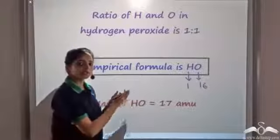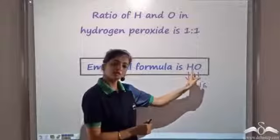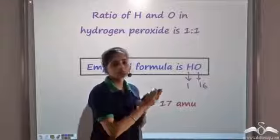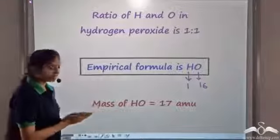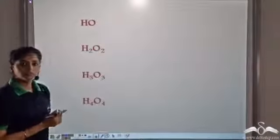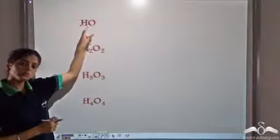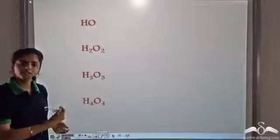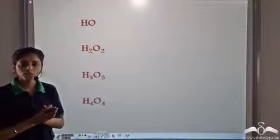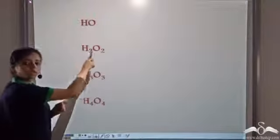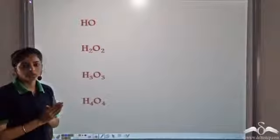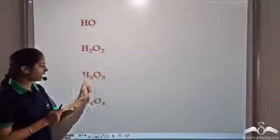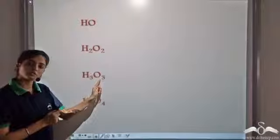We know this is the empirical formula — the ratio of hydrogen atoms and oxygen atoms is 1 is to 1. This means it can be anything: HO, H2O2, H3O3, H4O4, and so on, because we only know the ratio is 1 is to 1. We do not know the exact formula, that is the actual number of atoms of hydrogen and oxygen.